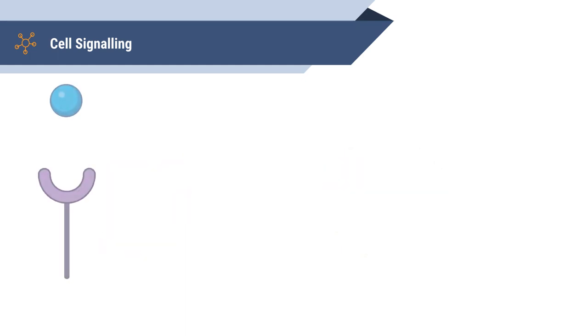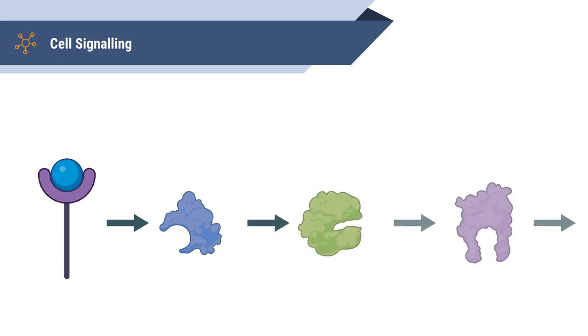The next step is signal transduction. Once a ligand binds to the receptor, a conformational change occurs in the receptor and this triggers a cascade of events. This could be the release of a secondary messenger or a conformational change that will recruit other proteins to bind.